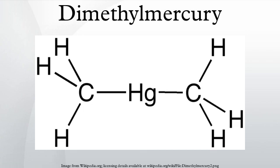It can also be obtained by transmetalation of mercuric chloride with methyl lithium: HgCl₂ + 2LiCH₃ → Hg(CH₃)₂ + 2LiCl. The molecule adopts a linear structure with Hg–C bond lengths of 2.083 Å.